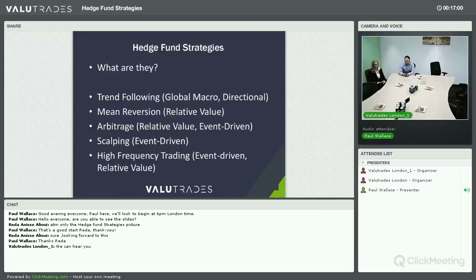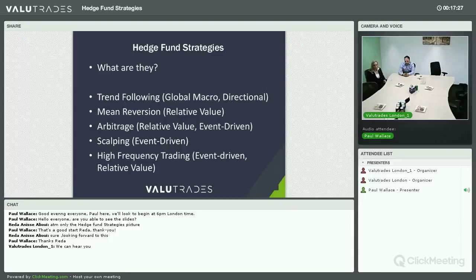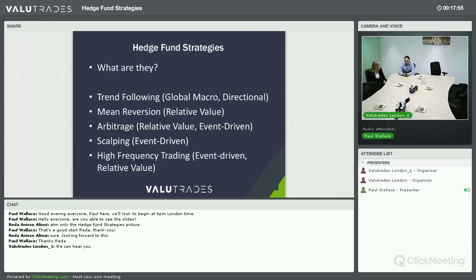When you break down the strategies, the majority use one of five styles: trend following — sometimes described as global macro or directional; mean reversion, which relates to relative value; arbitrage — sometimes described as relative value or event driven; scalping, which is event driven; and high frequency trading, which can be around event driven or relative value ideas. Regardless of all the financial jargon and acronyms, those four areas — macro directional, relative value, event driven — are the crux of what we're looking at.